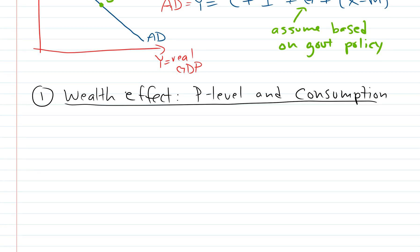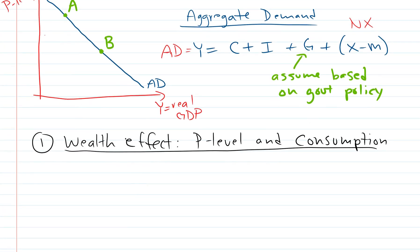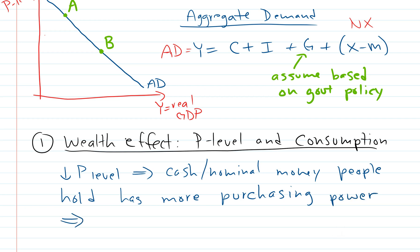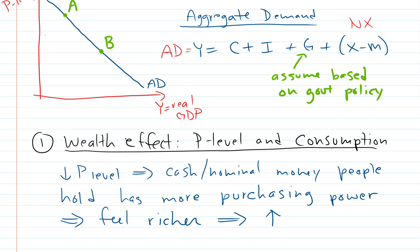I'm going to go with the price level going down, from A to B in our diagram. If our price level falls, the average price in the economy falls, then people hold cash or nominal money that now has more purchasing power. Before you could only buy a certain amount of stuff, now you can buy a lot more stuff. You feel wealthy and you go out and shop. They feel richer and this is going to increase consumption. That's the wealth effect.